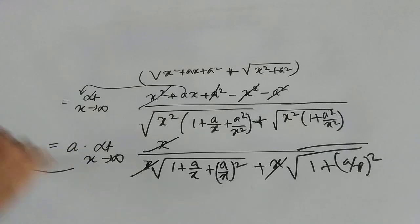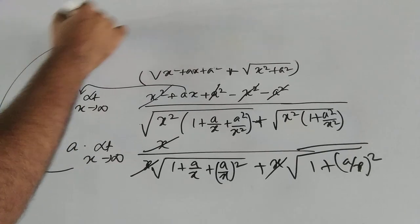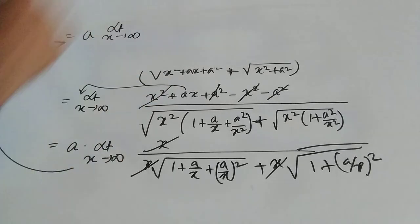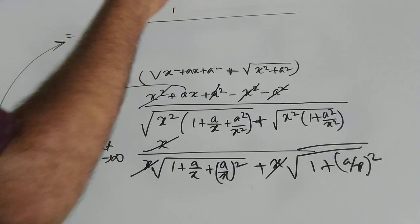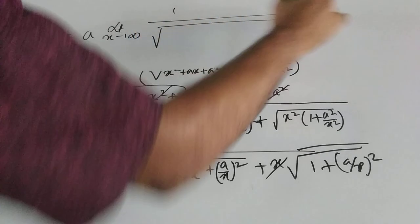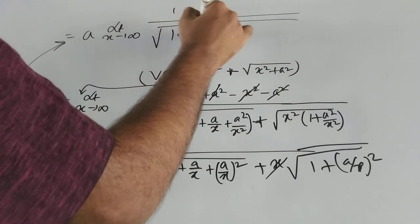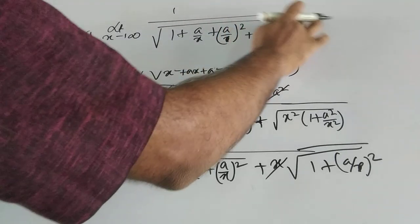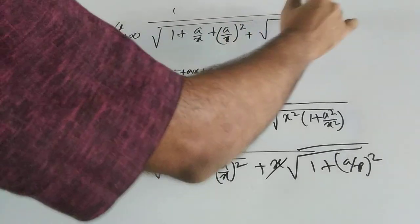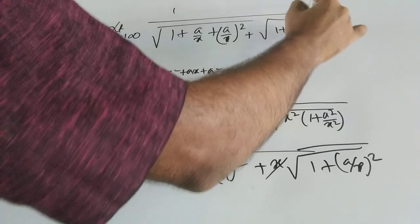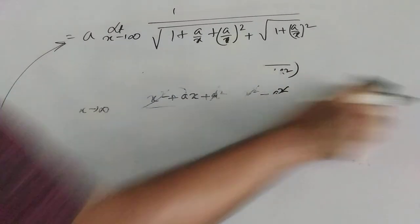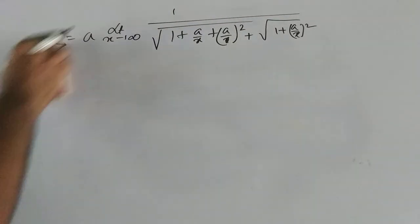My entire expression is now simplified as a times limit x tends to infinity of 1 divided by square root of (1 + a/x + (a/x)²) plus square root of (1 + (a/x)²).